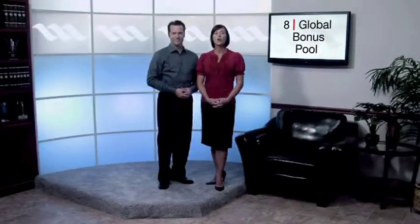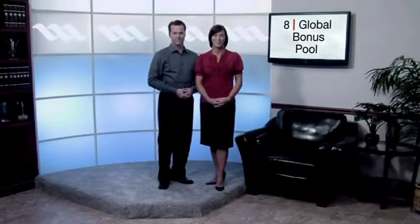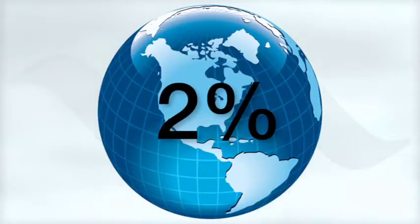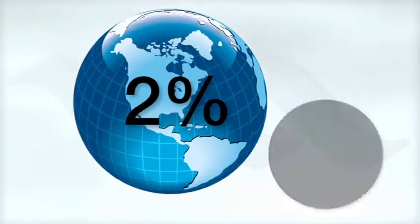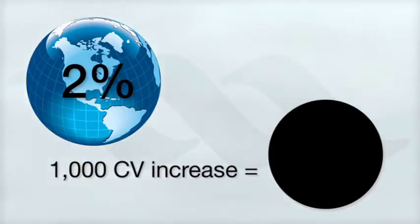The global bonus pool rewards all associates through the gold level who increase their commissionable volume by 1,000 CV each month. Here's how it works. 2% of the company's global commissionable volume is put into a global bonus pool. For each 1,000 CV that your pay team volume grows over the prior month, you will receive one share in this pool. However, once again, if you've enrolled or upgraded to diamond pack, you receive two shares in this pool.